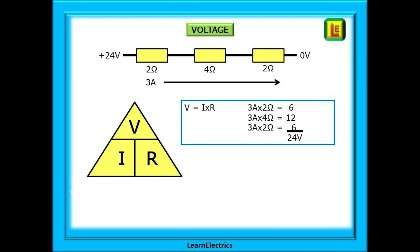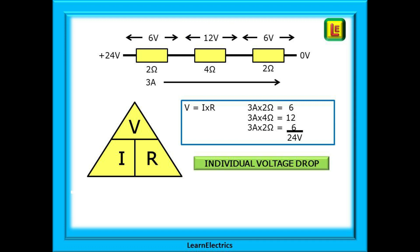This three amps of current flows through every resistance in the circuit — the same three amps flows through the first two-ohm resistance, through the four-ohm resistance, and through the final two-ohm resistance. Each resistance also has a share of the 24 volts depending on its size. Multiplying current by individual resistance: three amps times two ohms is six volts, three amps times four ohms is 12 volts, and three times two is six volts again.